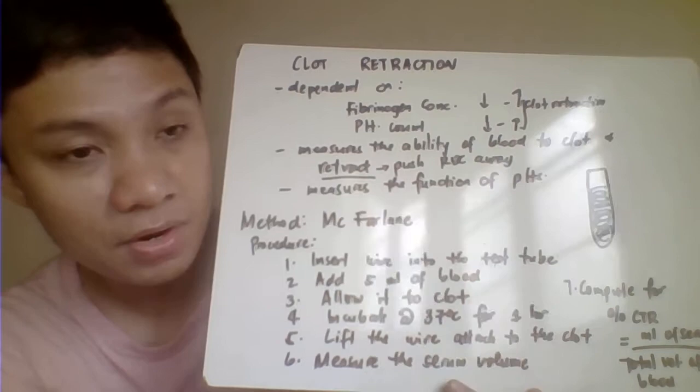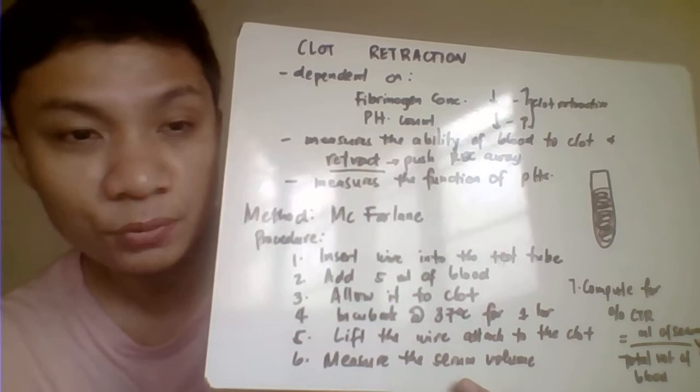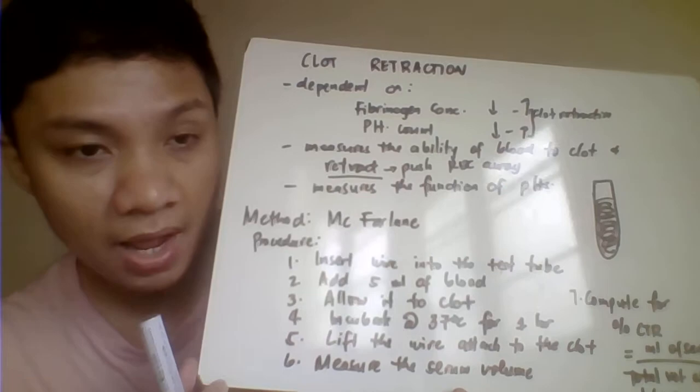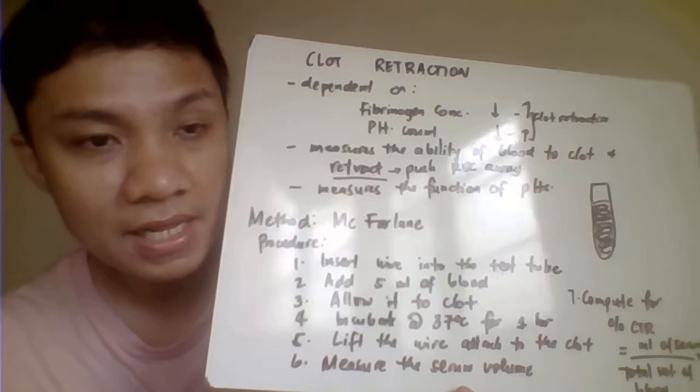Get your test tube and put here your spiral spring from a notebook, making sure it's tightly coiled. Then collect approximately 5 ml of blood and put it here, and observe until the blood clots.